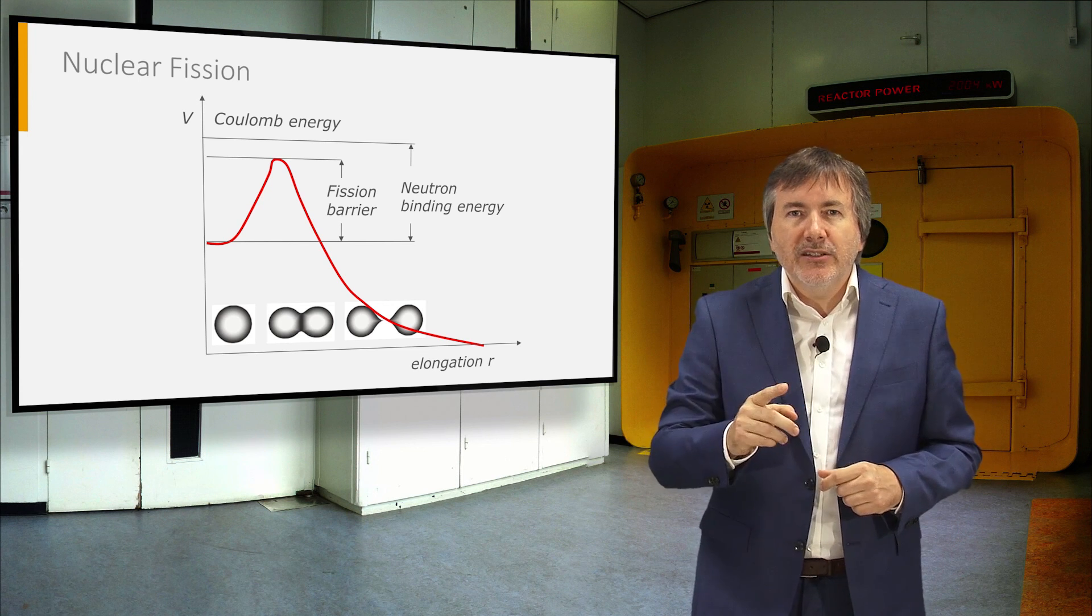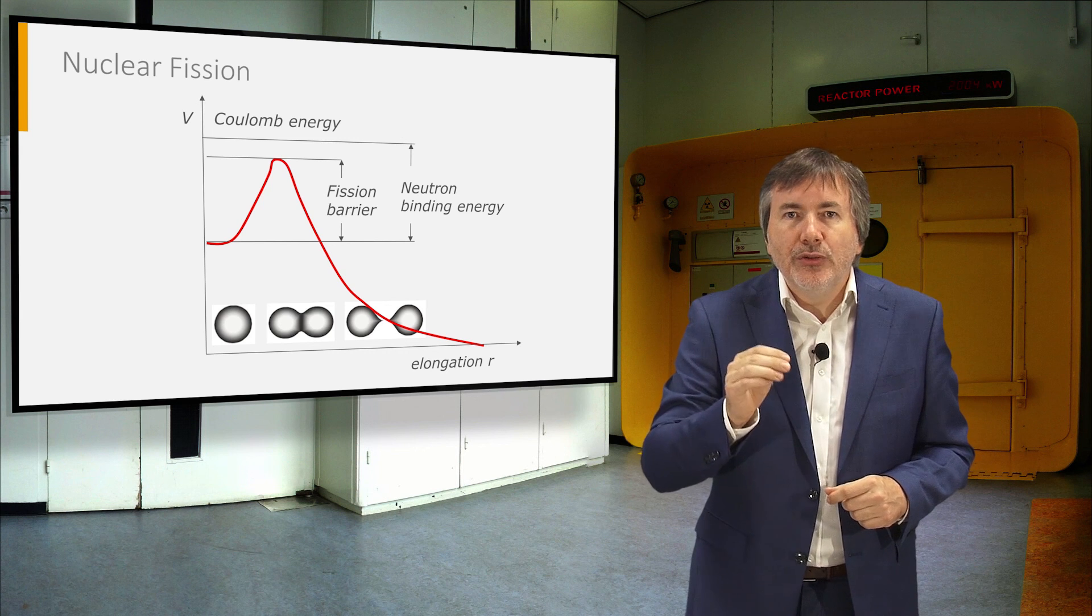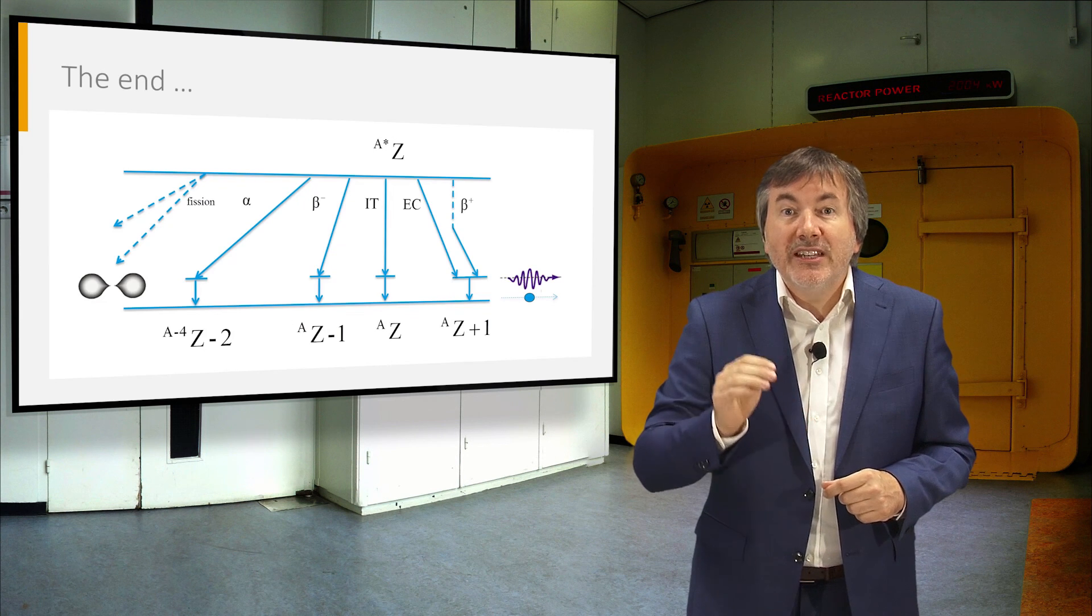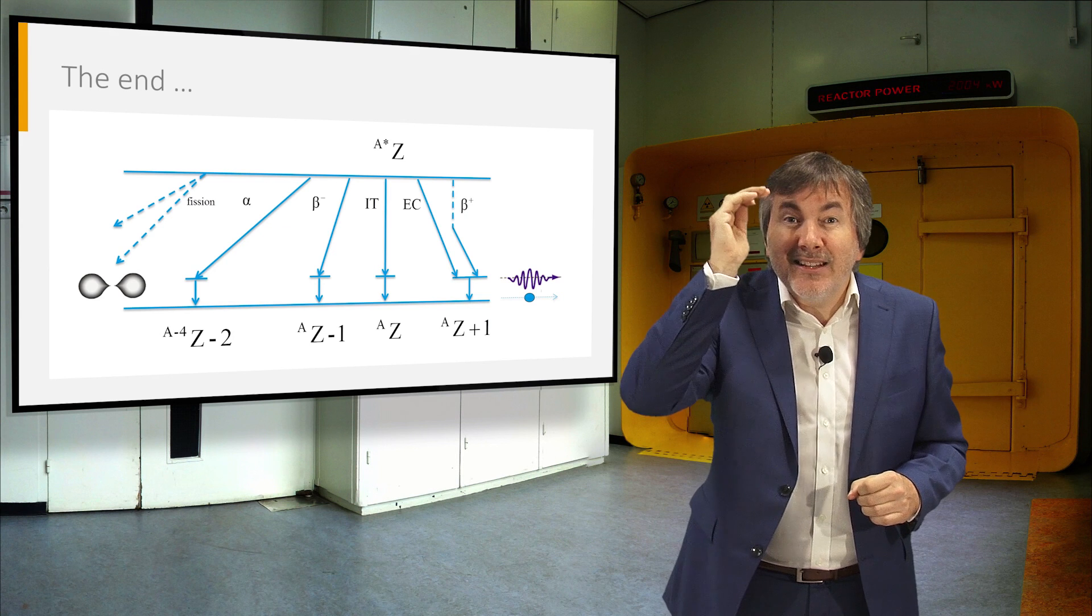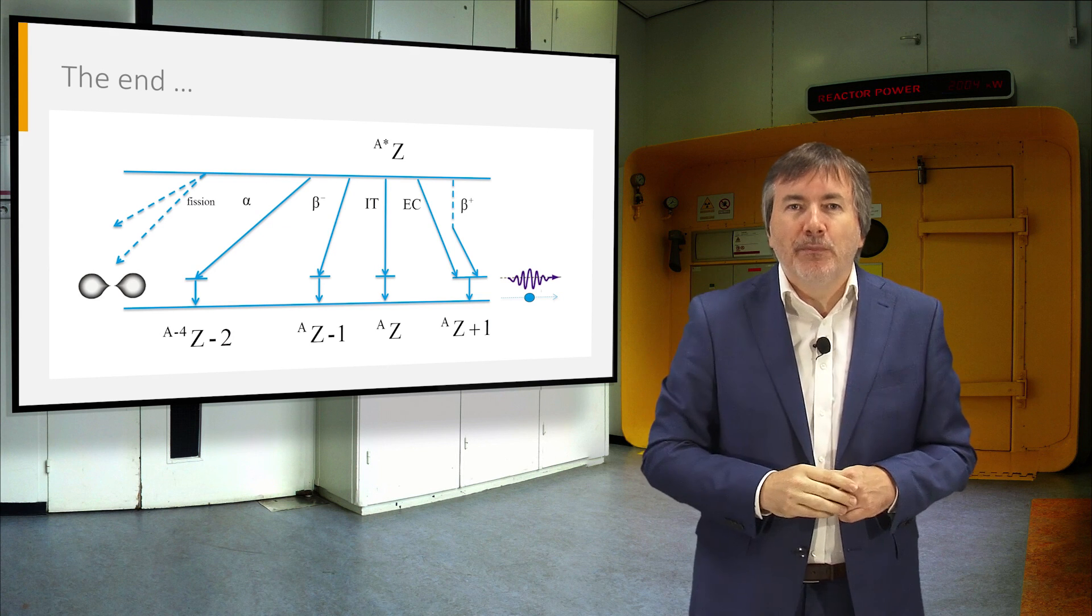In reactors, fission is induced by neutrons, which give the nucleus that extra binding energy it needs to pass the barrier.